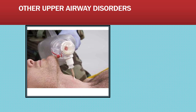Upper airway obstruction is a life-threatening emergency in which there's an interruption of airflow through the nose, mouth, pharynx, or larynx. Early recognition is essential to prevent further complications including respiratory arrest. Some inspissated oral or nasopharyngeal secretions may lead to obstruction or asphyxiation, so it's important to watch patients at risk for that.